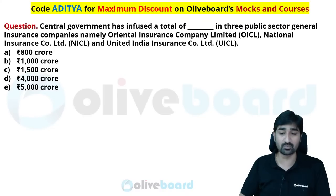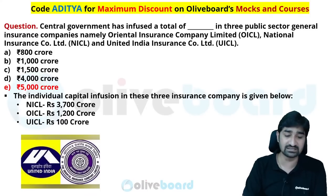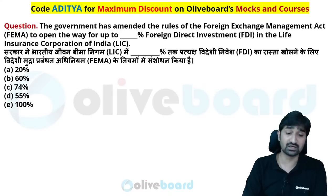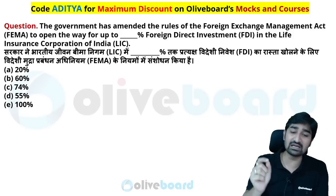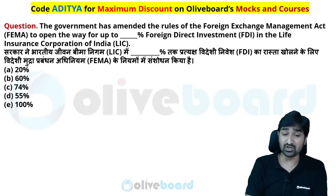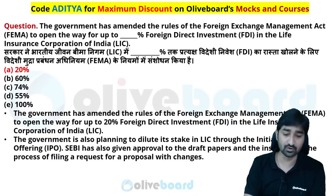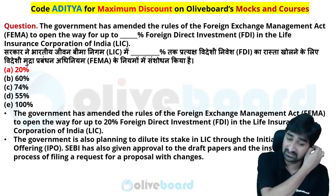The Central Government infused a total of 5,000 crore rupees into three public sector insurance companies: Oriental Insurance Company, National Insurance Company Limited, and United India Insurance Company Limited — with NICL getting 3,700 crore, OICL 1,200 crore, and UICL 100 crore. The Government of India also amended the Foreign Exchange Management Act to allow 20% FDI investment in LIC, so foreigners can now invest up to 20% FDI in LIC through the automatic route.